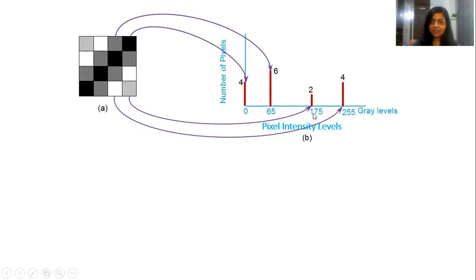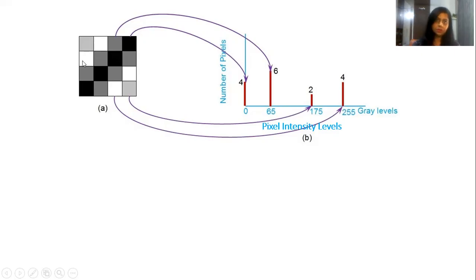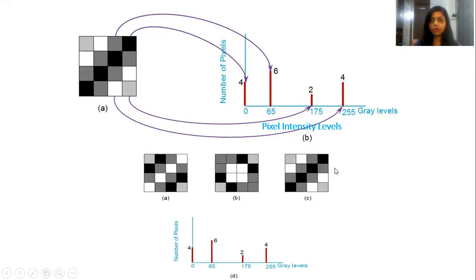The pixels with intensity level 175 are only 2. And pixels with intensity level 255 — that means perfect white pixels — are 4: 1, 2, 3, and 4. So this is the Histogram of this image.